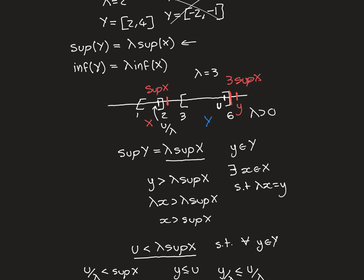To show it's the greatest lower bound: by contradiction, suppose there's a number l strictly greater than lambda × inf(X) that is still a lower bound for Y. That would imply a corresponding value in X strictly greater than inf(X) that is still a lower bound for all of X, contradicting inf(X) being the greatest lower bound. So lambda × inf(X) is indeed the infimum of Y. In the next part, we'll use these two results to prove the first part of the linearity property.